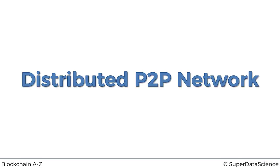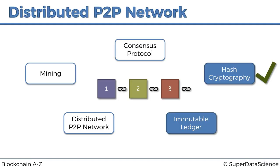Hello and welcome back to the course on blockchain. Today we're talking about distributed peer-to-peer networks. Previously we've already talked about hash cryptography — check that one off. We've also covered immutable ledgers and now we're moving on to distributed P2P networks.